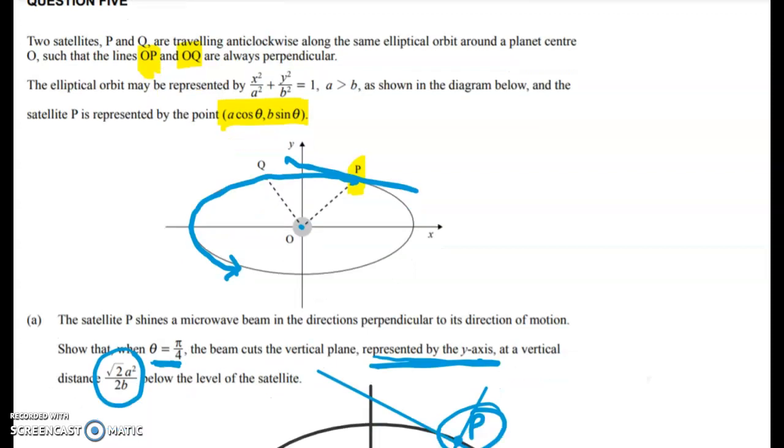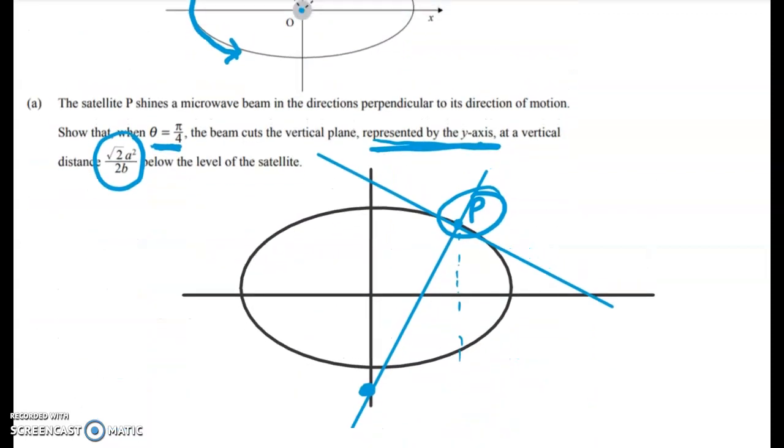So what is that getting at? Well, I drew another ellipse down here. And once you see this, the question breaks down pretty quickly. So here's my point P, and there's the normal. And we need to show that the vertical distance between this point here and where it cuts the vertical plane is this amount here that I'm circling now. So what we're looking for is to find the coordinates of this point, and then we're going to find the distance here, which will be that.